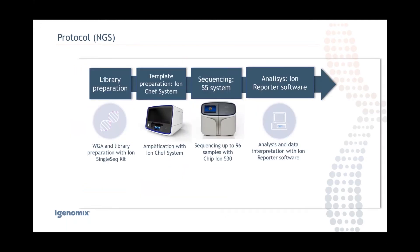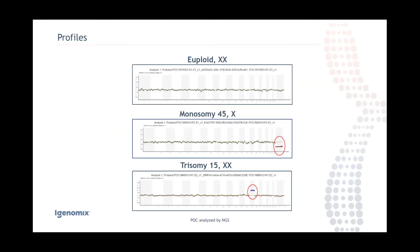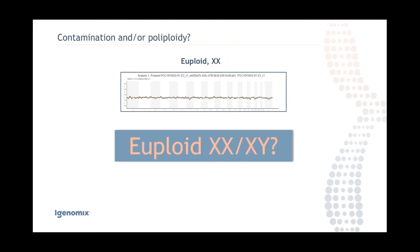The NGS protocol was the same as used for PGT. We obtained different profiles: on top, a euploid normal XX profile; in the middle, a monosomy X — 45,X — which is one of the most prevalent findings, occurring in 8–10% of miscarriage cases; and on the bottom, trisomy 15, also one of the most prevalent. I will show you the data shortly.